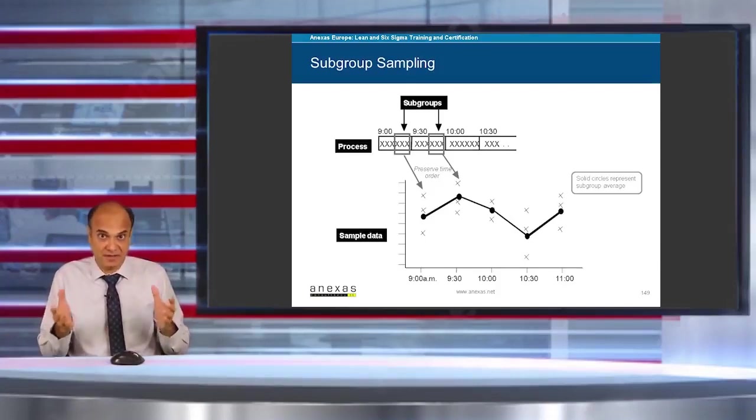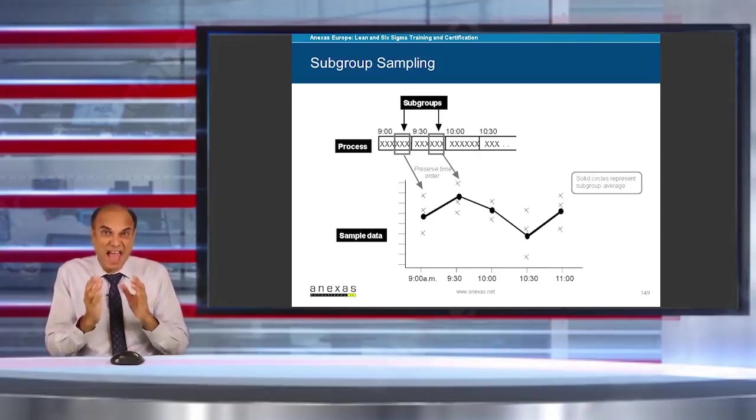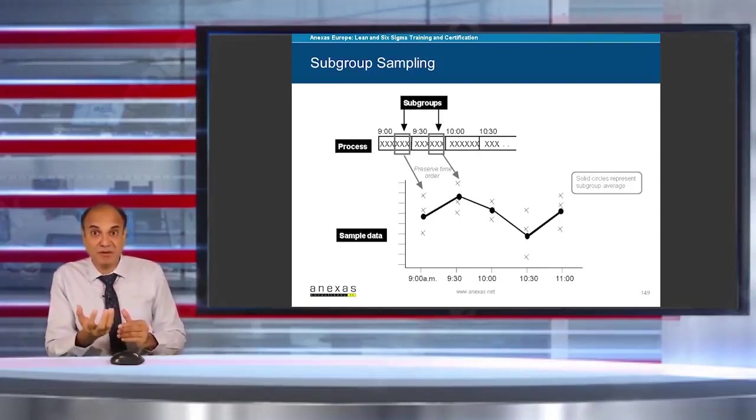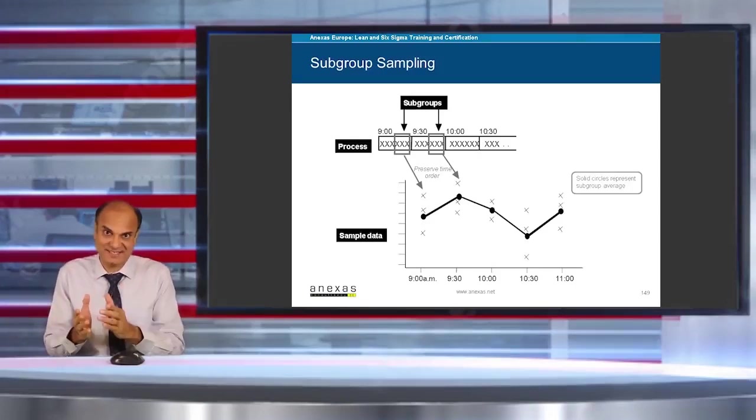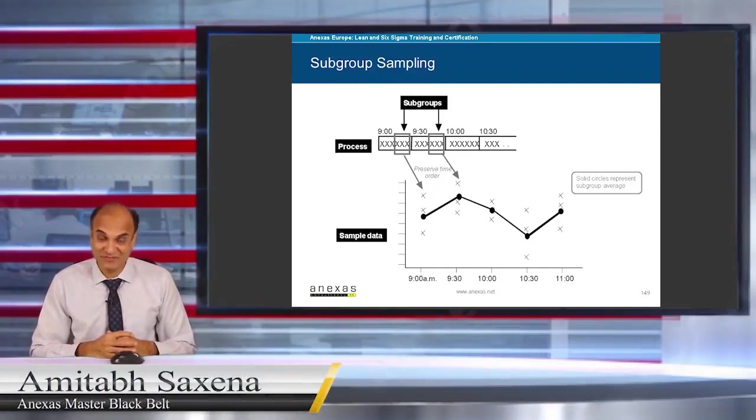You are making the judgment about the process based on the subgroup. So you are calculating the average weight of those five chocolates and making a judgment about the performance of the process. We will be using X bar R chart later on in the control phase, and at that time we will require a good understanding of subgroup sampling technique.